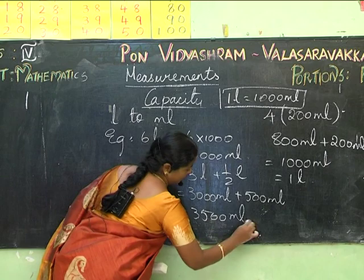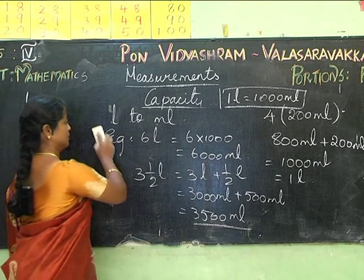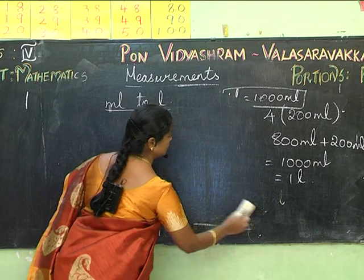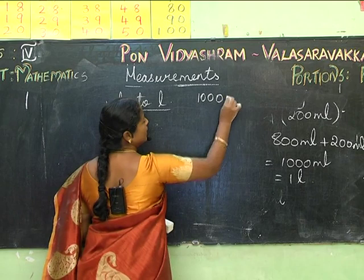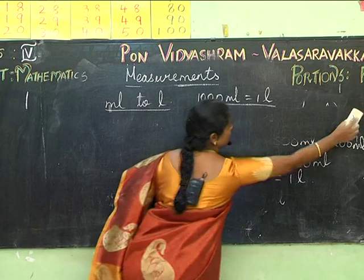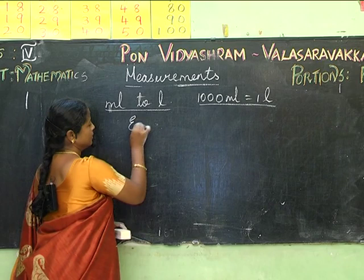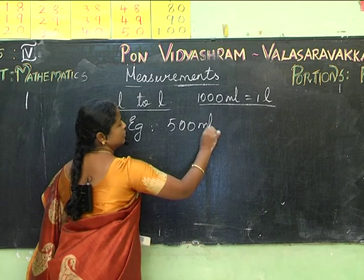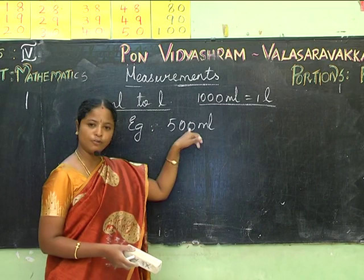Now we shall change from milliliters to liters. When converting from mL to liters, 1000 mL equals 1 liter. For example, if I have 500 mL — you know 1000 mL is 1 liter, and 500 is half of it — so we write it as half a liter.